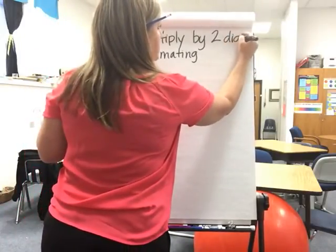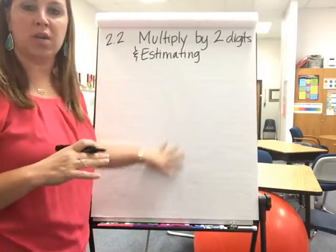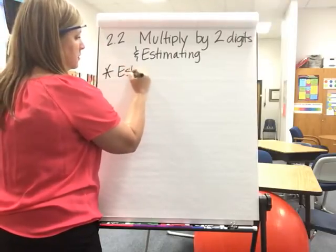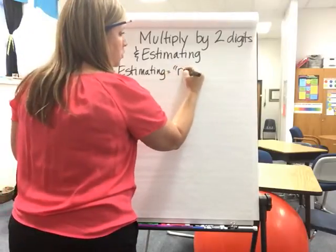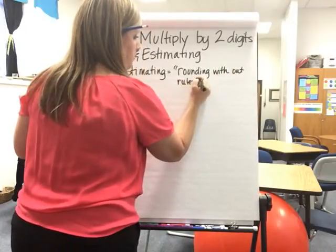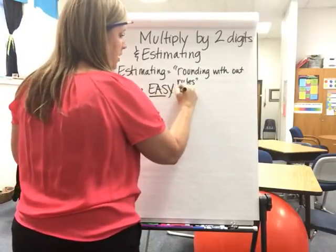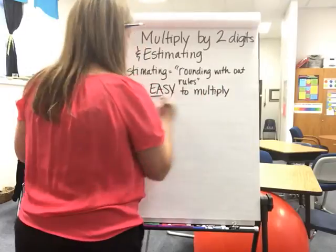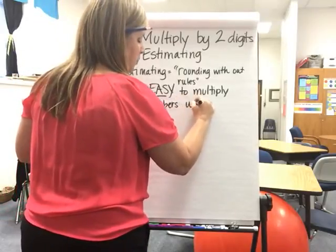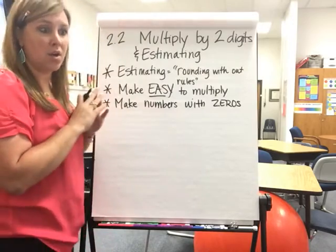So multiply by two digits. Please make sure you pause and play when necessary. Notes are not going to take that long. I just wanted to quickly go over this, and we're going to go straight to our workbook. The big thing you need to remember is when you are estimating, it's rounding without rules, just like before. You want to solve these problems in like 10 seconds or less.